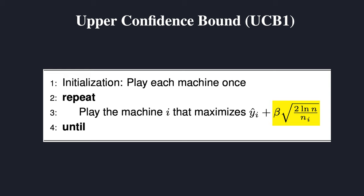Let's plug in the values for each machine, starting with bandit 1. The average return is 1/6 multiplied by the sum of all rewards, which comes out to be 10. For the second term we plug in n = 10 because there were 6 + 2 + 2 rounds played, and N_i = 6. That gives us about 10.876. Doing the same for the other two bandits gives us the following values, and bandit 2 has the highest UCB score at 11.517 — so the algorithm would now play bandit 2.